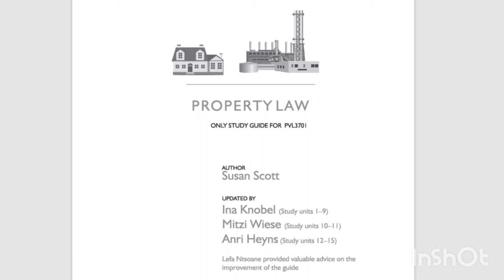We distinguish between natural fruits (fructus naturalis) — for example, wool, fruit, or milk — and civil fruits (fructus civilis), or non-organic yield — for example, interest on capital or rent payments. In the case of natural fruits, further distinctions can be made between hanging fruits (fructus pendentes), separated fruits (fructus separati), and gathered fruits (fructus percepti). The rights to these fruits will vary according to the relevant legal relationship involved.